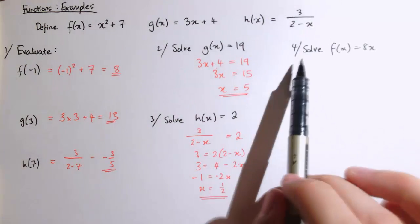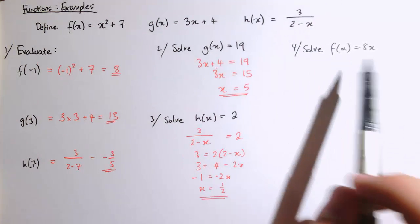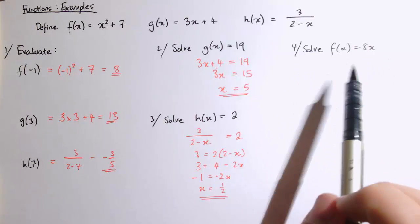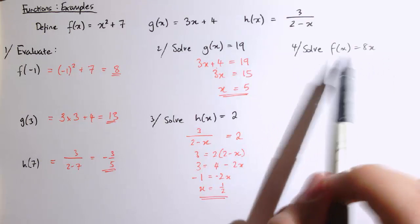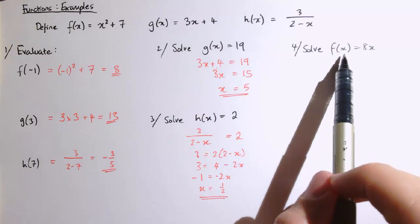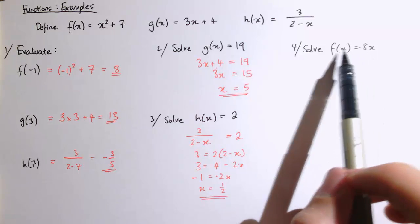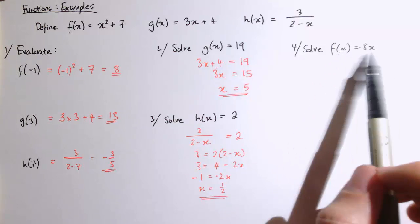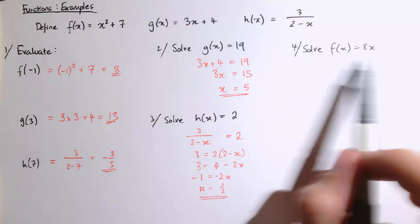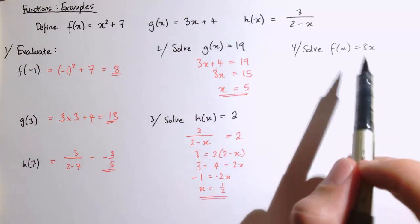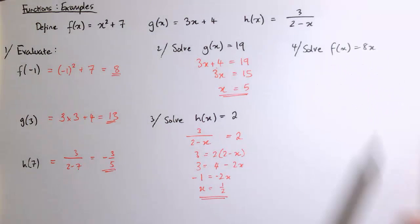One last example then. Solve f of x equals 8x. Slightly different here. It's not just saying which x do we put into this function to get a certain number out. Actually, we're saying when is it that the output is 8 times the input? When I put x in, I get 8x out. So the output is 8 times the input.